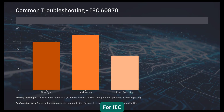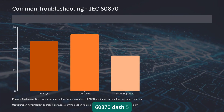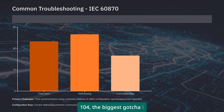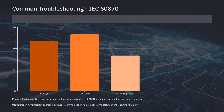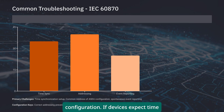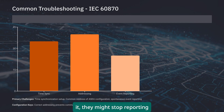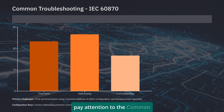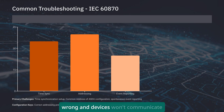For IEC 60870-5-104, the biggest gotcha is time synchronization configuration. If devices expect time sync but don't receive it, they might stop reporting spontaneous events. Also, pay attention to the common address of ASDU settings — get that wrong and devices won't communicate at all.